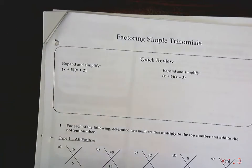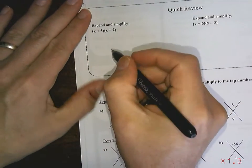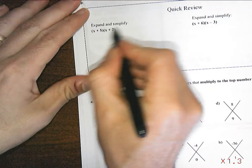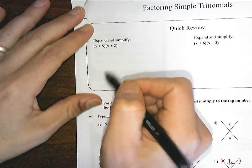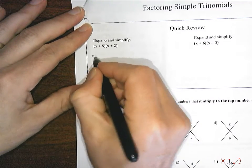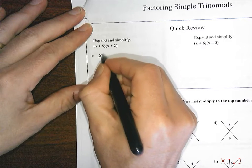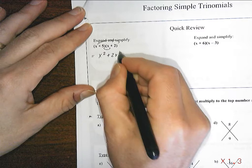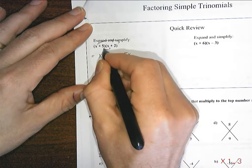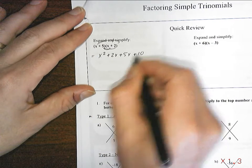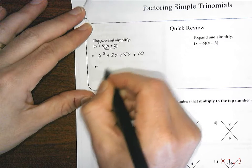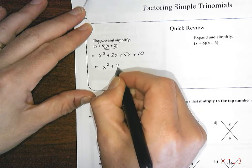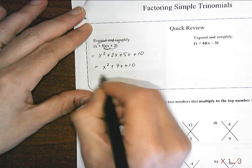Now, what it means to factor a trinomial is to go the reverse of expanding and simplifying two binomials. So here I have two binomials being multiplied. X times X is X squared, X times 2 is 2X, 5 times X is 5X, and 5 times 2 is 10. This gives us X squared plus 7X plus 10. This is a trinomial.